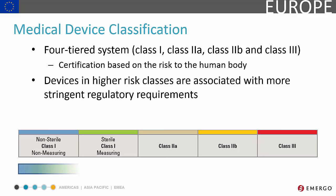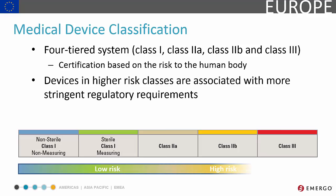The EU divides medical devices into different categories, including Class 1 non-sterile non-measuring, Class 1 sterile and measuring, Class 2A, 2B, and Class 3 devices. Similar to medical devices in other regions, the higher the risk, the higher the device classification.